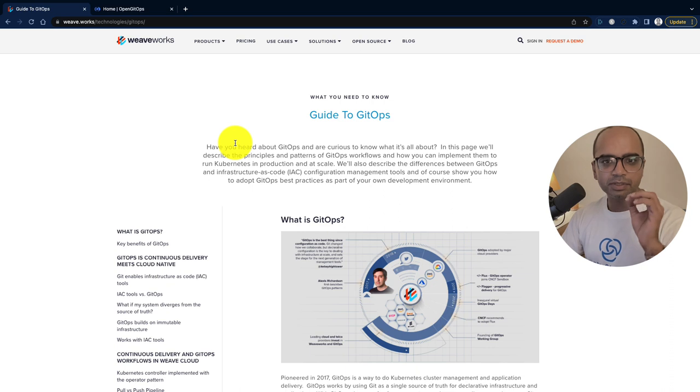Let's first start with an interesting fact. GitOps as a term was coined by WeWorks, which was originally involved in creating one of the most popular network plugins for Kubernetes. And they coined this term back in 2017 when they started working on a project called Flux.